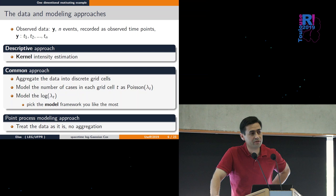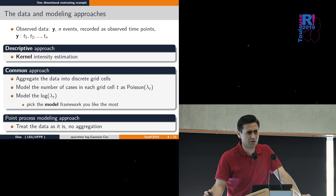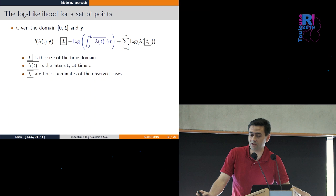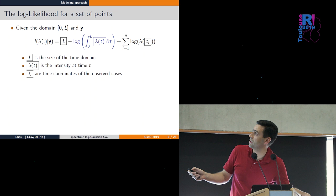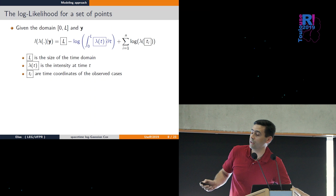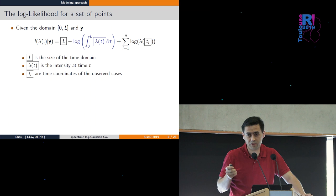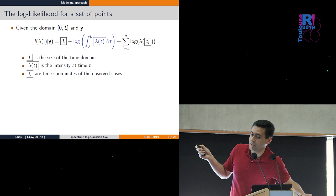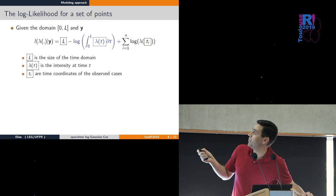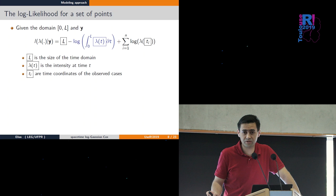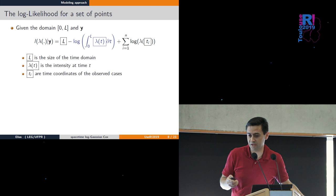There is a likelihood function for this model where the log likelihood given data is the domain size minus the integral over the domain of the intensity function, plus the sum of log intensity evaluated at each time location. No discretization here, but the hard part is computing this integral. In one dimension it may not be difficult - just place 100 grid points and do numerical integration.